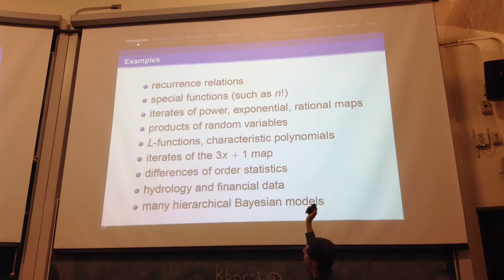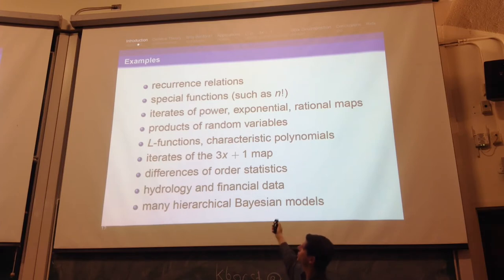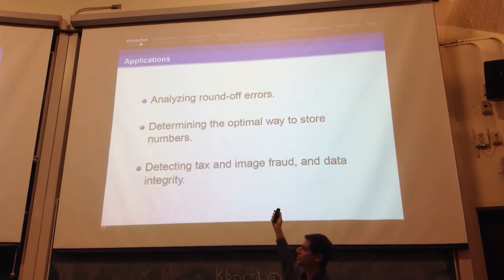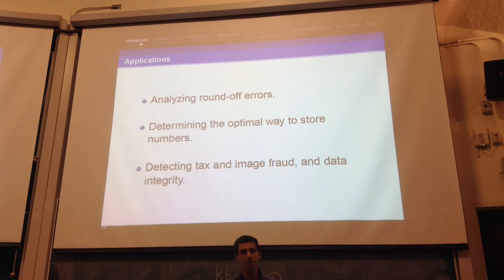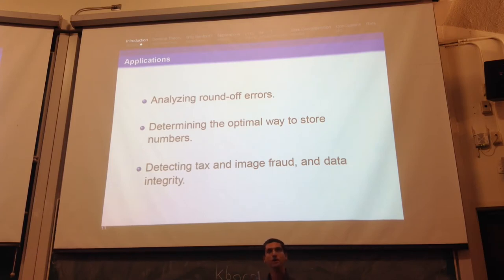There are lots of different examples where Benford occurs: recurrence relations, special functions, iterates of maps, products of random variables, L-functions, 3x plus 1, order statistics, financial data, hierarchical Bayesian models. The major applications are: analyzing round-off errors, figuring out the optimal way to store numbers, and most importantly, determining whether or not fraud is happening — or more broadly, data integrity. Maybe your machine is just not recording data properly through no fraud, nothing malicious, but you're not getting the right values.